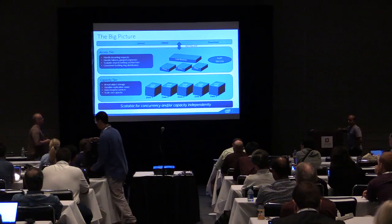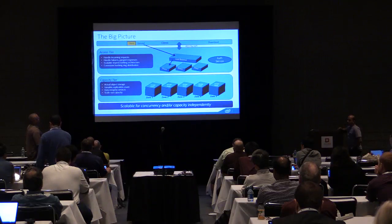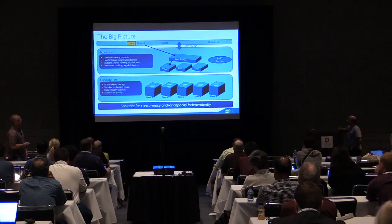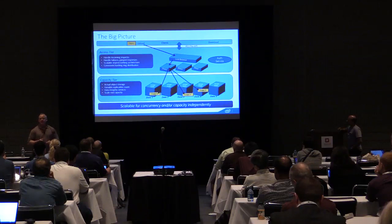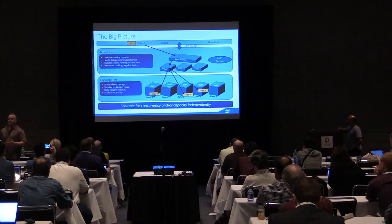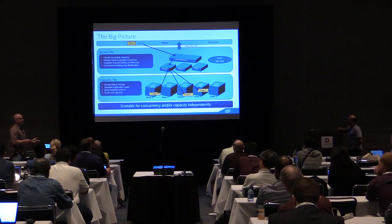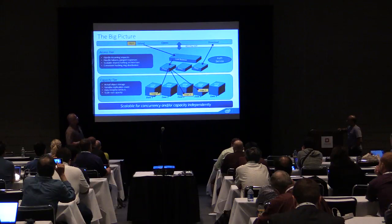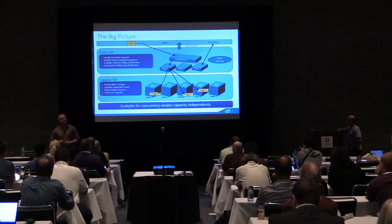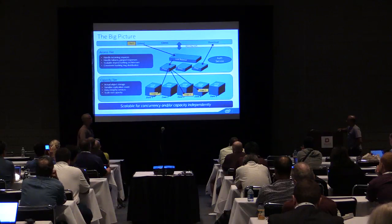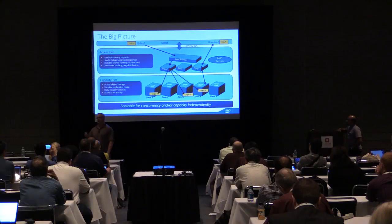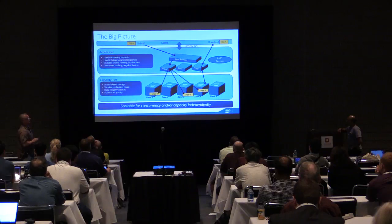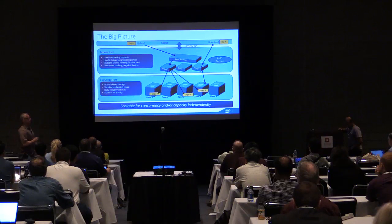This two-tier architecture gives you independent scalability — you can scale for concurrency by adding proxy nodes, and scale for capacity by adding storage nodes. These services can all live on one box or on multiple boxes depending on your usage requirements, so it's incredibly flexible. An object comes in, hits the load balancer, which picks a proxy. The proxy consults the ring to determine where to send three copies of the object. When a client requests an object, it hits the proxy, which picks one of the object servers to retrieve it.